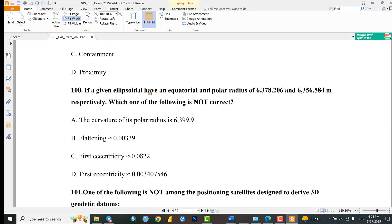Question 100: If a given ellipsoid has unequal equatorial and polar radius of specified amounts in meters respectively, which one of the following is not correct? Options include the character of polar radius, flattening, or first eccentricity. You can calculate and check, the answer is first eccentricity for this one.